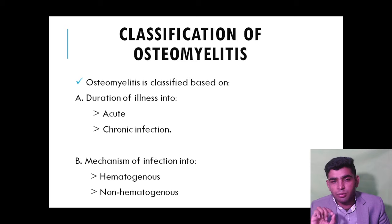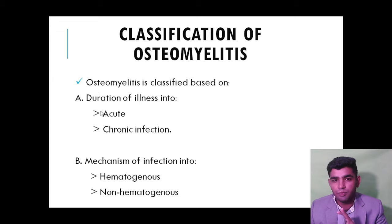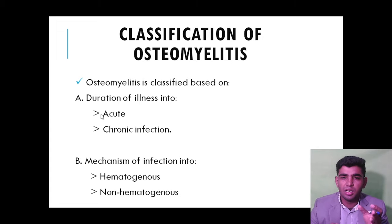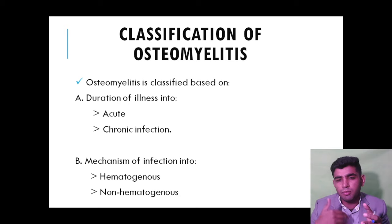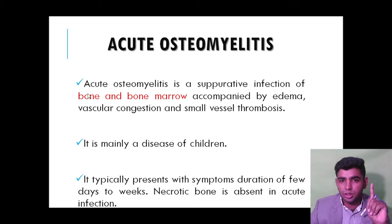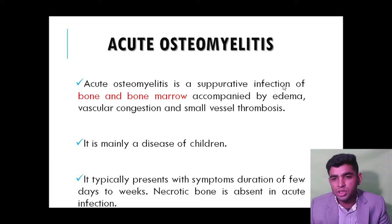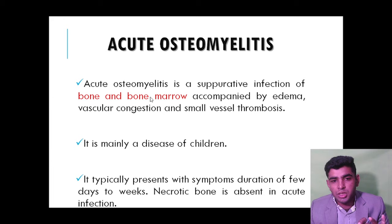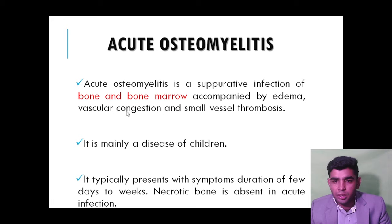Classification of osteomyelitis is based on duration of illness: acute is less than six months and chronic is greater than six months. Acute osteomyelitis is a suppurative infection — pus formation in the bone and bone marrow — accompanied by edema, vascular congestion, and small vessel thrombosis.